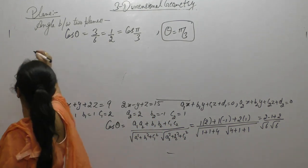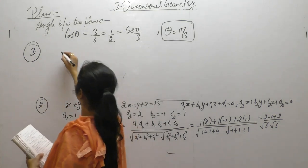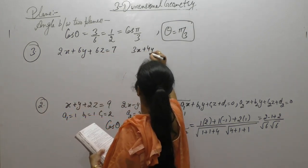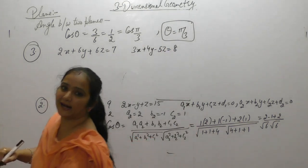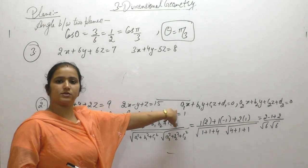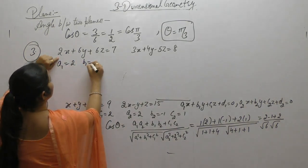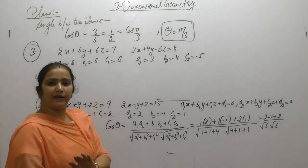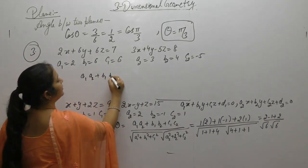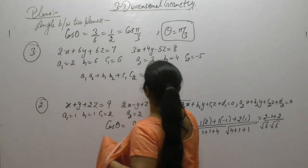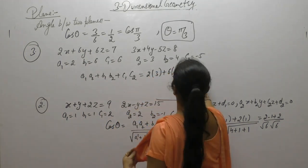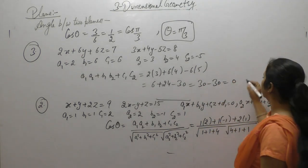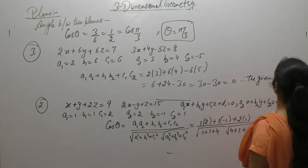Show that the planes 2x plus 6y plus 6z equals 7 and 3x plus 4y minus 5z equals 8 are at right angles. Comparing, we get a1 equals 2, b1 equals 6, c1 equals 6, a2 equals 3, b2 equals 4, c2 equals minus 5. The planes are perpendicular if a1a2 plus b1b2 plus c1c2 equals 0. Computing: 2 into 3 plus 6 into 4 minus 6 into 5 equals 6 plus 24 minus 30 equals 0. Therefore the given planes are perpendicular.